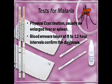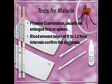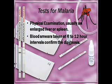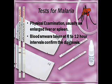There are a few tests for malaria. You have a physical examination, which usually includes examining your liver or spleen. If you have it, there's a chance your liver and spleen will both be enlarged. Blood smears are also taken at 6 to 12 hour intervals in order to confirm whether malaria is present in your body.